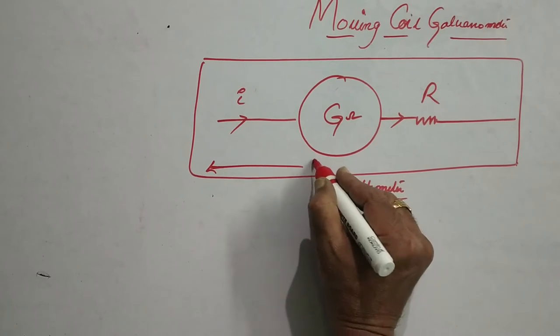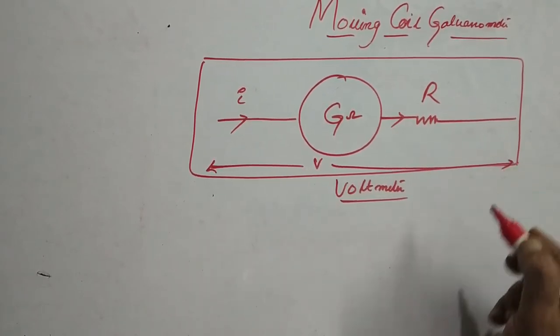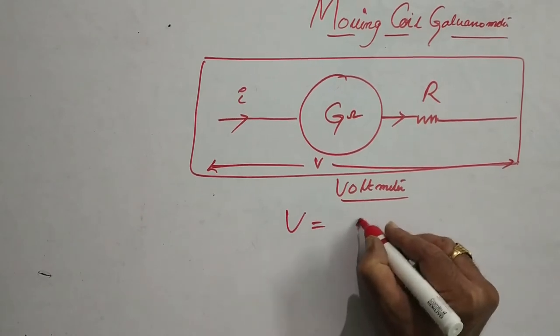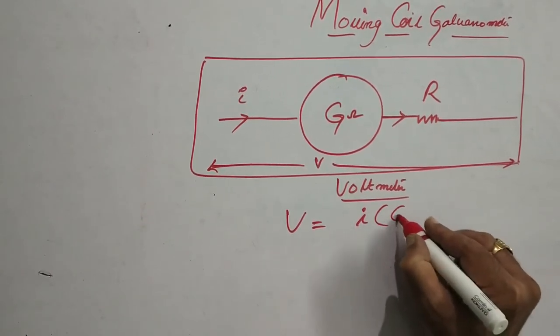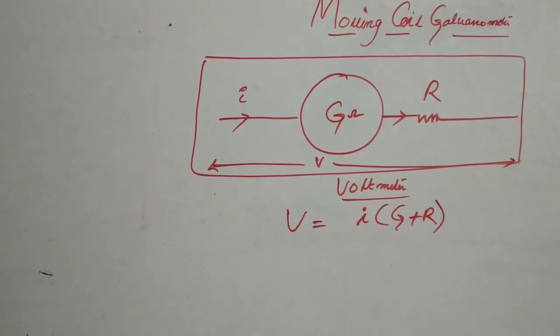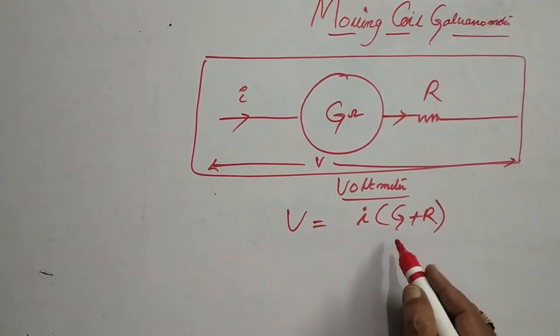If the net potential is V, then V is equal to I times G plus R as they are connected in series.